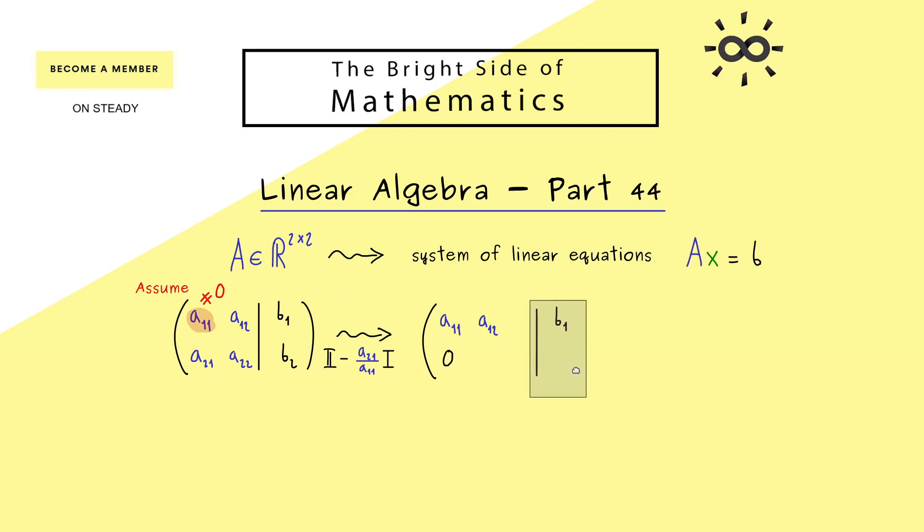And now we just have to calculate to see what we get for the other entries. So you see it's not so complicated. We multiply this factor with this entry and then we subtract it from a₂₂. And very similarly we get it for the right-hand side. And at this point the Gaussian elimination is already finished because we have our row echelon form here. So for a two-dimensional system it's very quick.